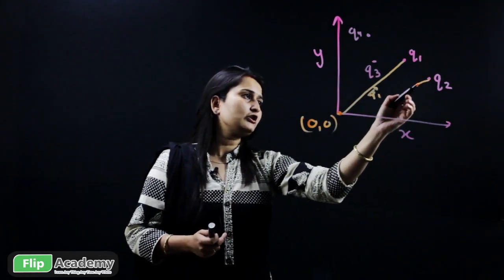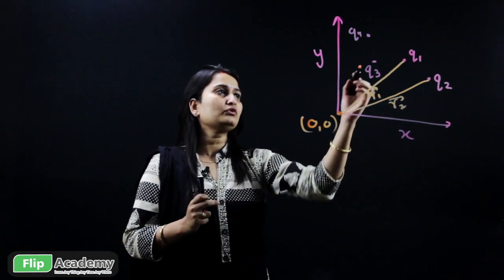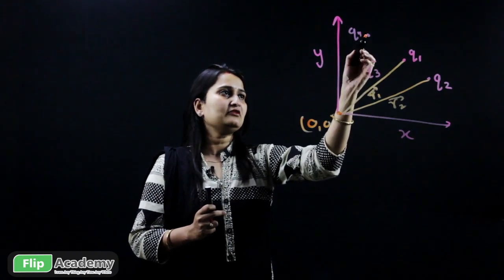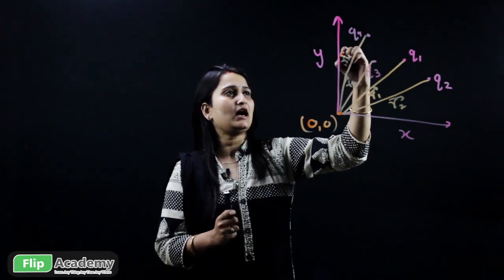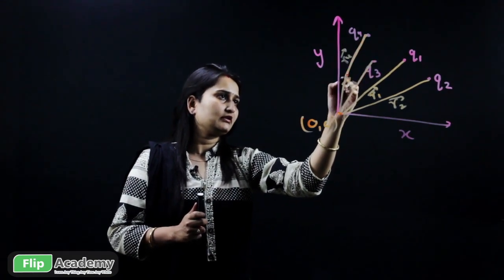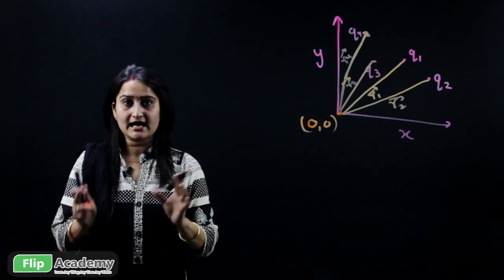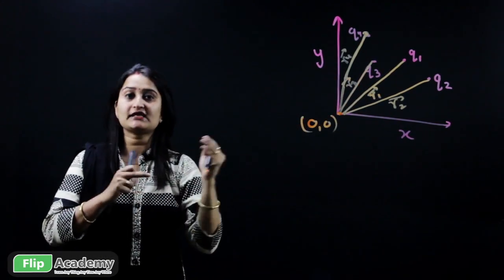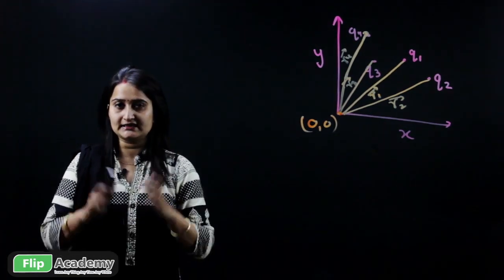Similarly, for q2 there is a position vector r2, for q3 there is r3, and for q4 there is r4. These are your position vectors — r1, r2, r3, and r4 — which are straight lines joining each charge with the origin.